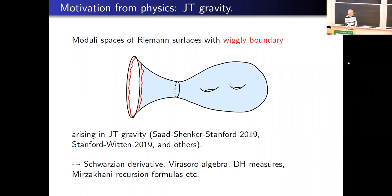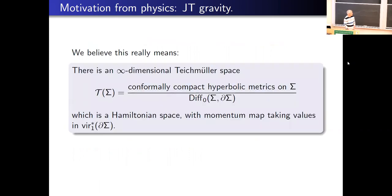With those famous names — Stanford, Witten and so on — there has to be something to it. So we tried to understand this a little bit. One understanding we have is that what's really going on is that one is dealing with some sort of infinite-dimensional Teichmüller space of so-called conformally compact hyperbolic metrics on the surface.